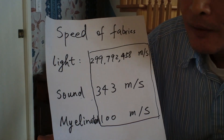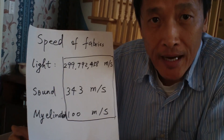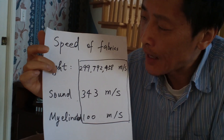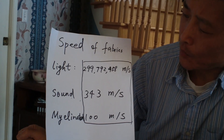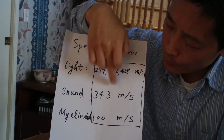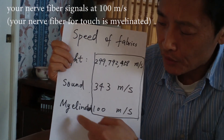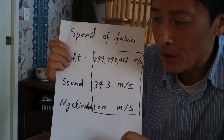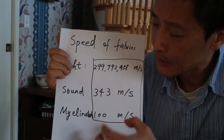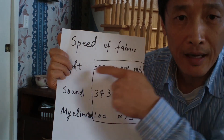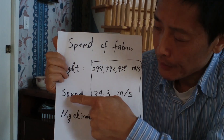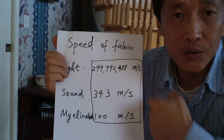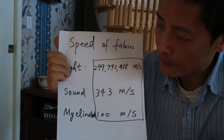We are comparing visual reaction time, audio reaction time, and touch reaction time. Let's look at the physical media first. When you see something, light travels very fast — 299 million meters per second. Sound travels at 340 meters per second. Your nerve signal travels at about 100 meters per second. That's only at the beginning. The bulk of processing is in your brain, which takes much longer. The light speed and sound speed differences can essentially be ignored.